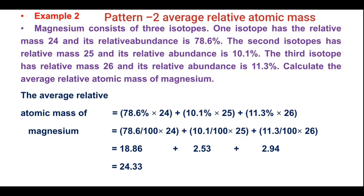Magnesium consists of three isotopes. One isotope has the related mass 24 and its relative abundance is 78.6%. The second isotope has related mass 25 and its relative abundance is 10.1%. The third isotope has related mass 26 and the relative abundance is 11.3%. Calculate the average related atomic mass of magnesium.